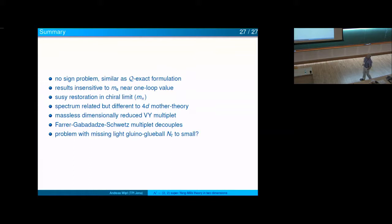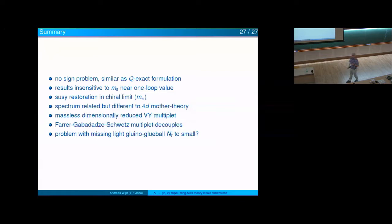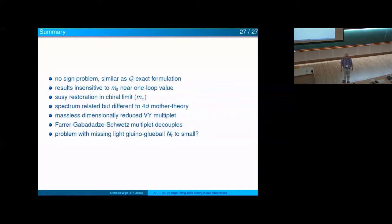To summarize: there is no sign problem, similar to the Q-exact formulation. Results are insensitive to the scalar mass near the value from lattice perturbation theory. We have seen SUSY restoration by tuning the pion mass to zero within error bars, fine-tuned on each finite lattice. The spectrum is related to but different from the four-dimensional parent theory: there is a massless dimensionally-reduced Veneziano-Yankielowicz multiplet; the second multiplet decouples from the spectrum; and there is one missing light gluino-glueball which I would like to fit into the master multiplet but we haven't seen it yet.